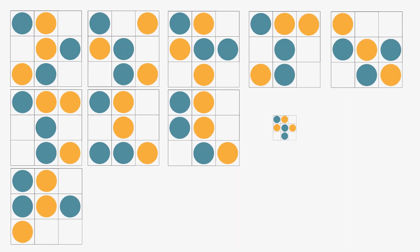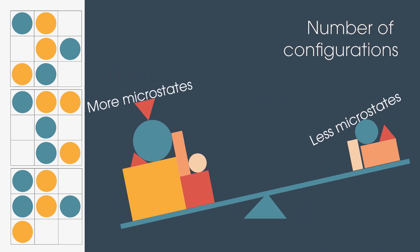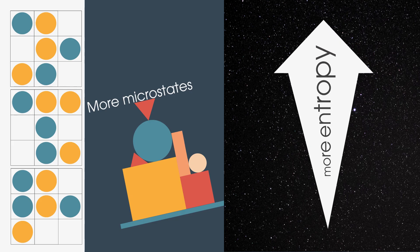Entropy counts or measures the number of all the possible configurations of particles in a closed system. The more configurations or microstates a certain closed system contains, the more likely it is to occur, hence it contains more entropy.